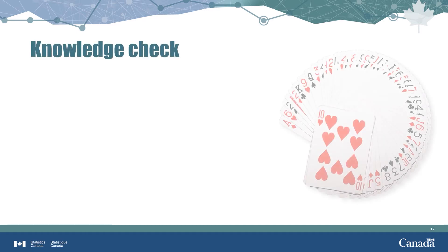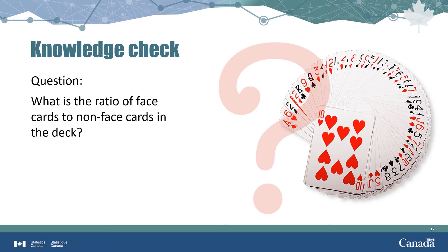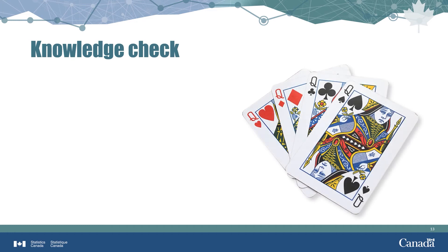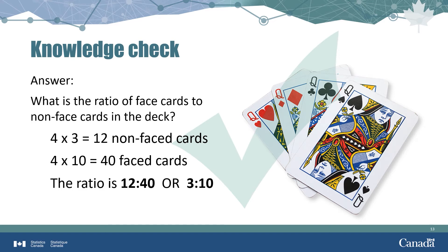Now, what is the ratio of face cards to non-face cards in the deck? There are four suits, each with three face cards — jacks, queens, and kings — and ten non-face cards. Four times three is twelve face cards, and four times ten is forty non-face cards. The ratio of face cards to non-face cards is 12:40, or more simply, 3:10 — for every three face cards, there are ten non-face cards.